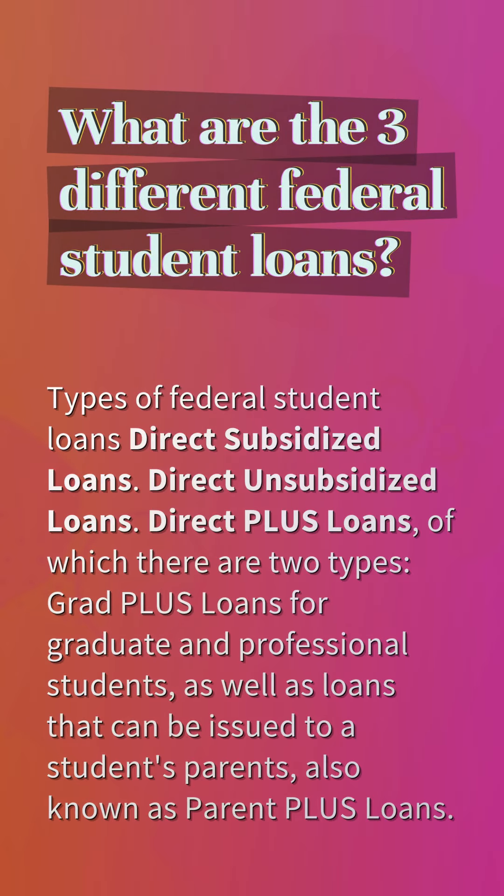What are the three different federal student loans? Types of federal student loans: Direct subsidized loans, direct unsubsidized loans, and direct PLUS loans — of which there are two types: grad plus loans for graduate and professional students, as well as loans that can be issued to a student's parents, also known as parent plus loans.